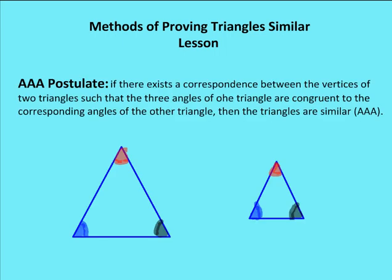Let's talk about similar triangles. Remember, a similar triangle has the same ratios of sides, and the corresponding angles are going to be congruent. So we can say now with the AAA postulate — angle, angle, angle — that if we have three congruent angles between two triangles, such that three angles of one triangle are congruent to the corresponding angles of the other triangle, then the triangles are going to be similar.